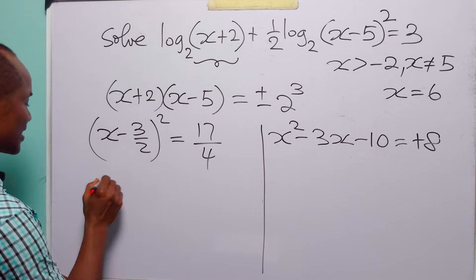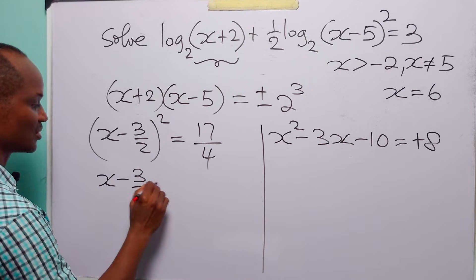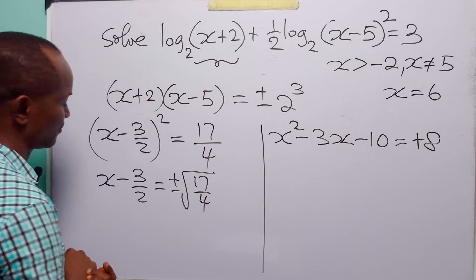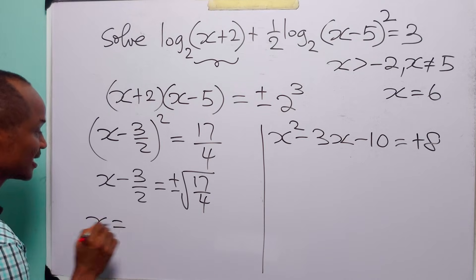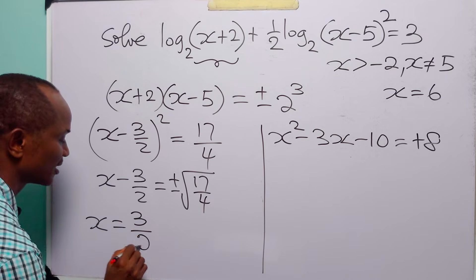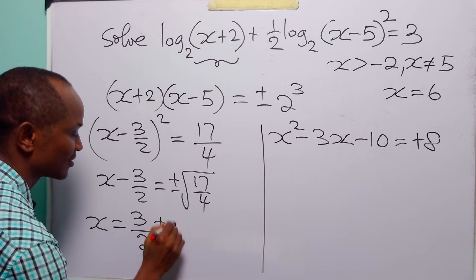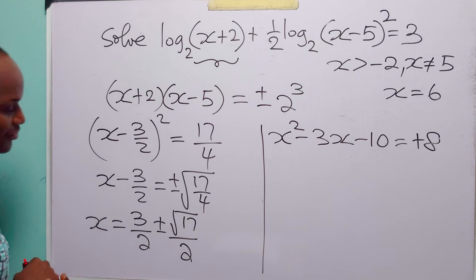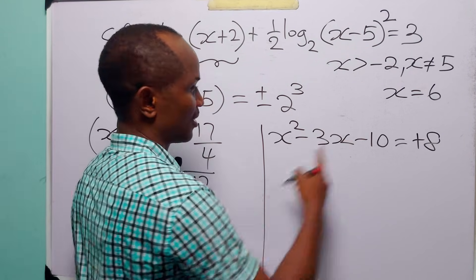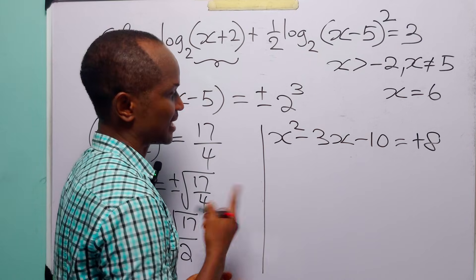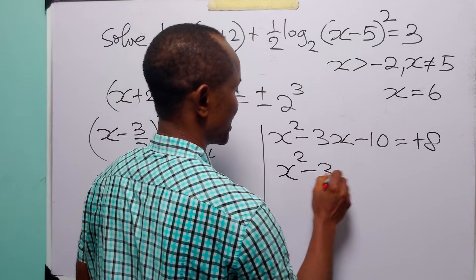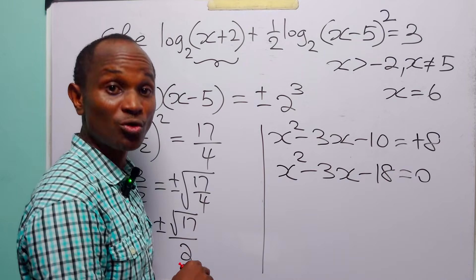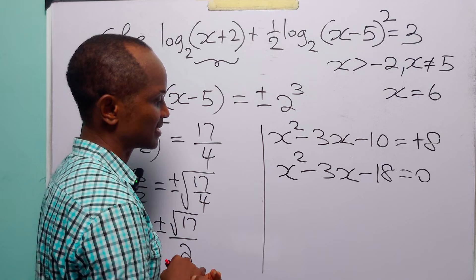Taking the square root of both sides gives x minus 3 over 2 equals plus or minus the square root of 17 divided by 2. Bringing 3 over 2 to the right-hand side, the second equation gives x squared minus 3x minus 18 equals 0, which we already solved.